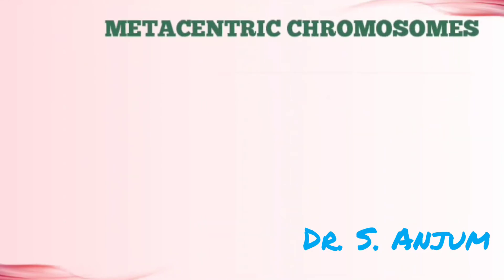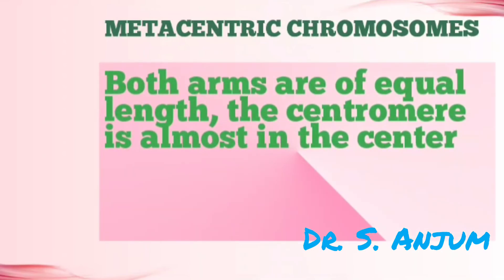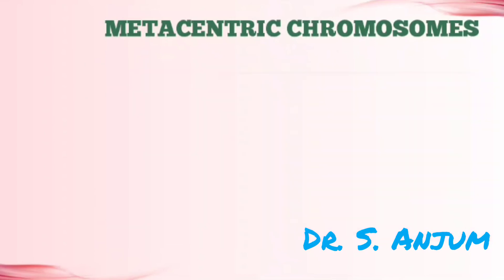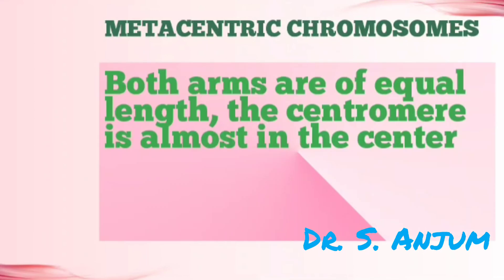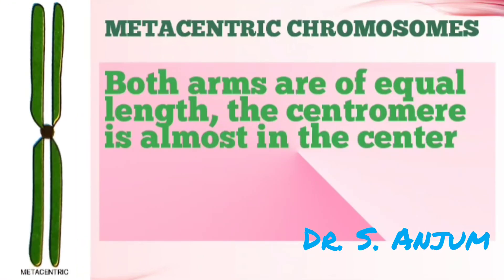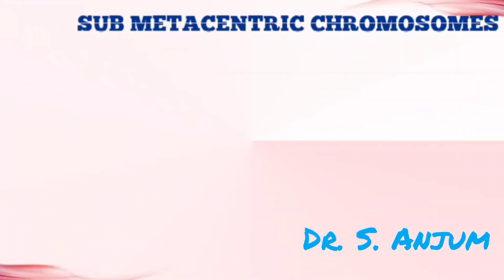In a metacentric chromosome, both arms are of equal length and the centromere is almost in the center. As you can see in the picture, both arms of the chromatid are of equal length and the centromere is present in the center.